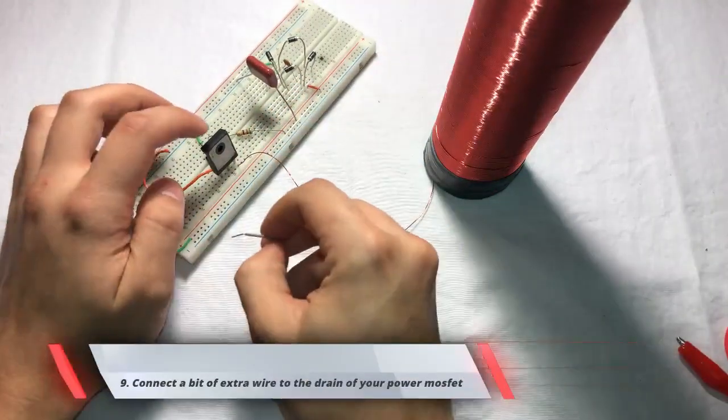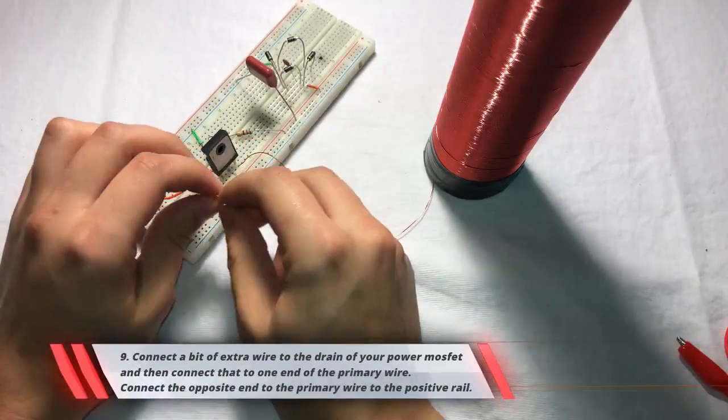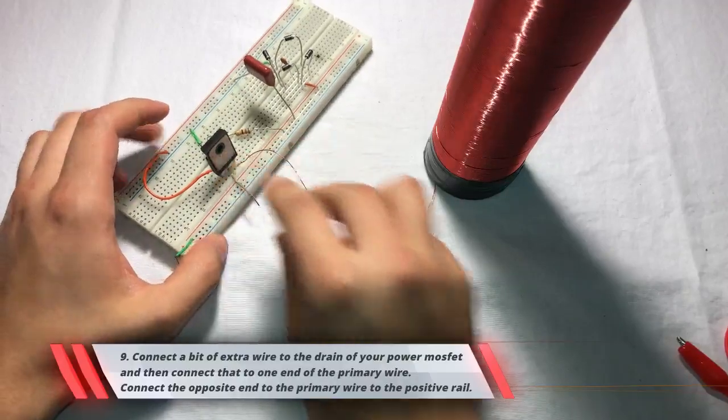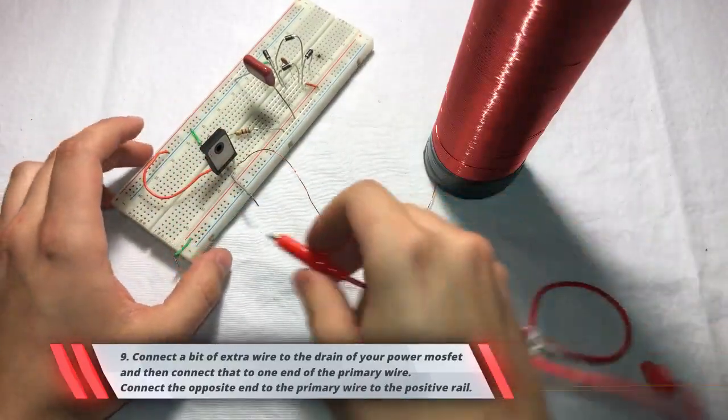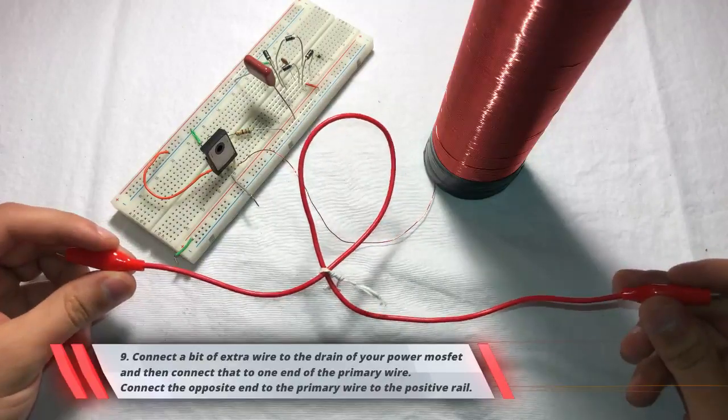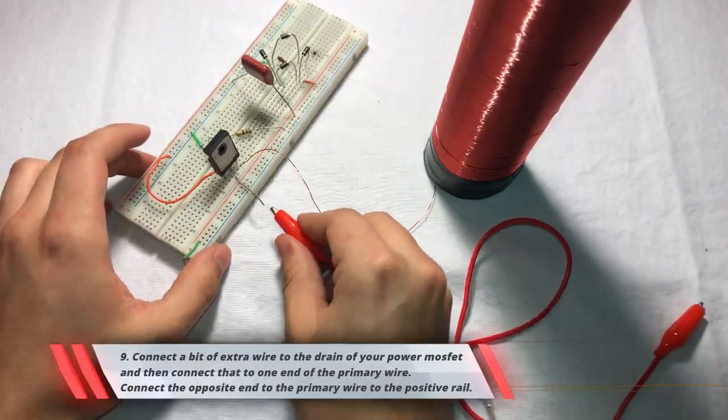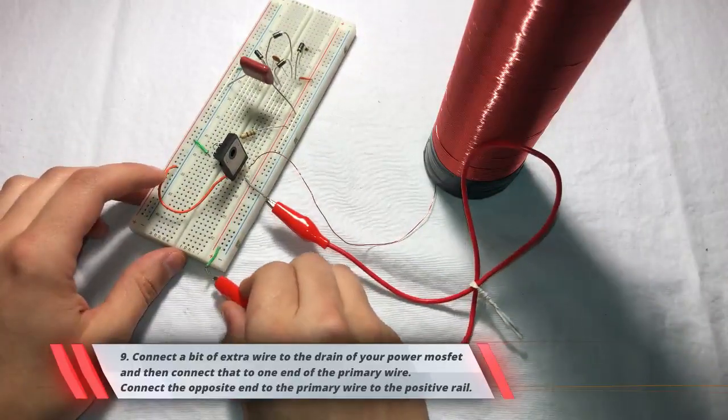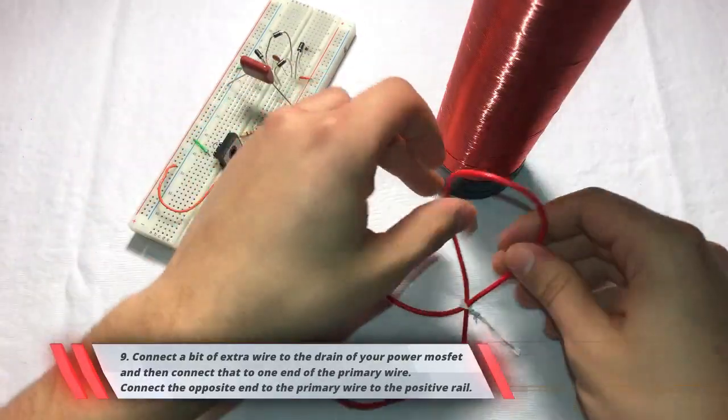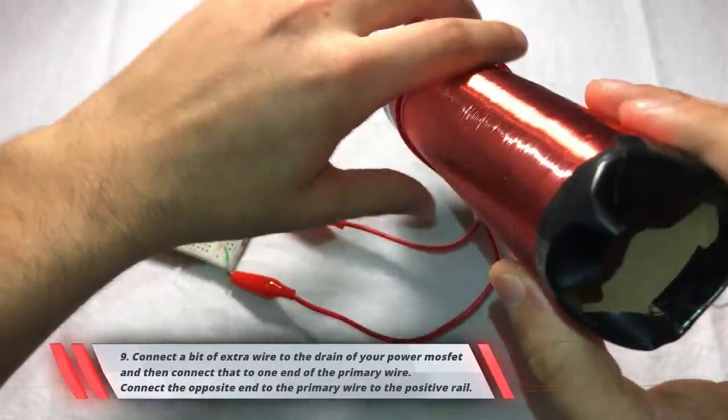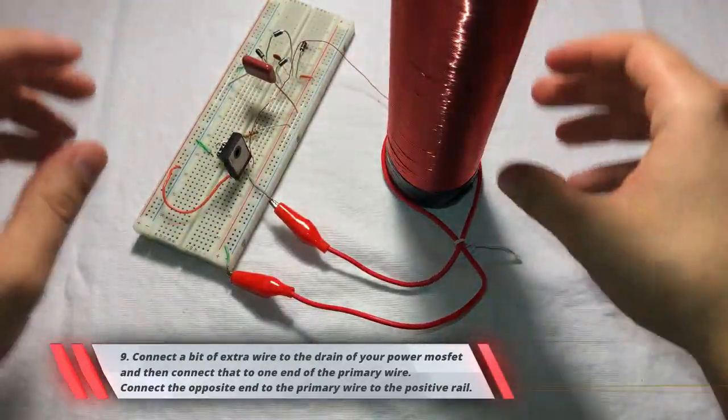And now in the drain of our MOSFET which is the center pin. I'm going to connect a little bit of extra wire. And then this wire, our primary wire is going to get connected to that. So one side of the primary wire is going to connect to there. And the other one is going to connect to our positive rail. And then it's just going to go over the primary, over the secondary coil, sorry, just like that.